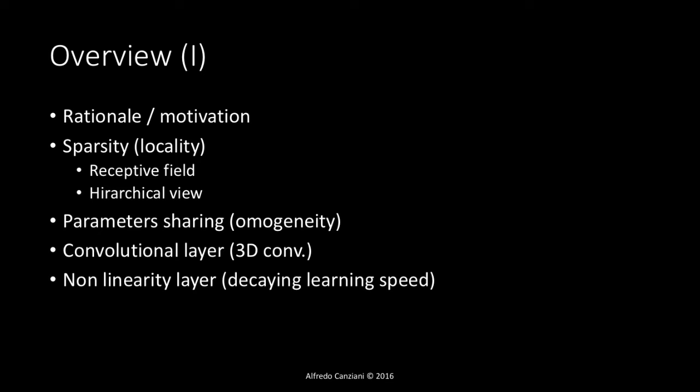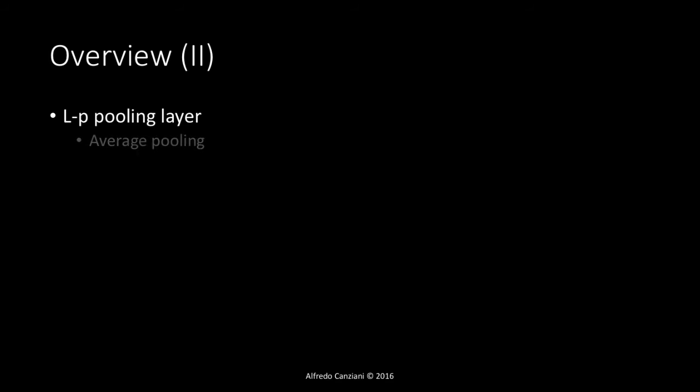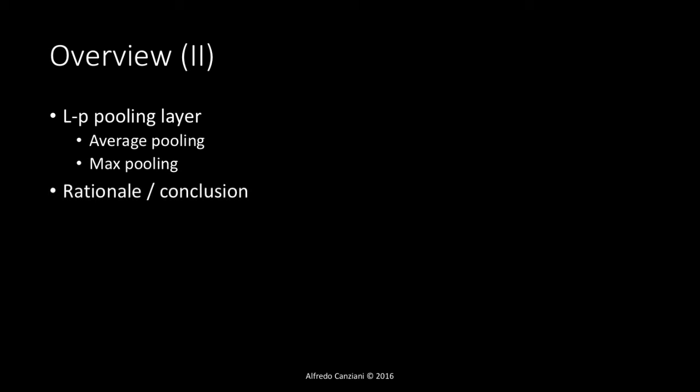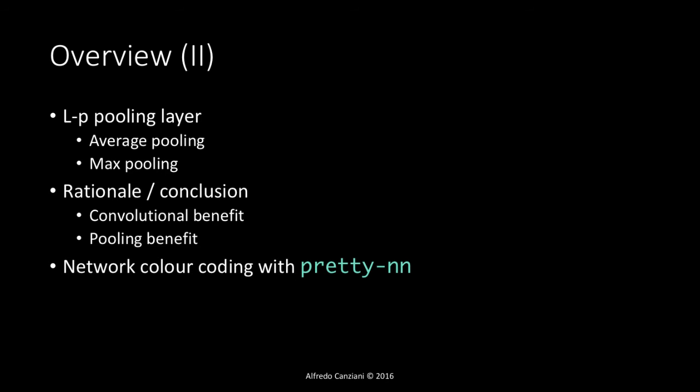We will see how a convolutional layer performs a 3D convolution for image processing. Then we will talk about the non-linearity layer and decaying learning speed across the network — revising the logistic sigmoid and introducing the rectifying linear unit. We will also introduce LP pooling, where two specific cases are average pooling and max pooling. Then we will draw conclusions on the benefits of convolutional and pooling layers, and install the prettynn package in the shell to get color-coded network architectures.